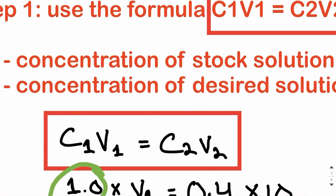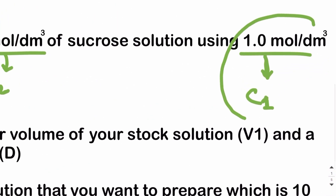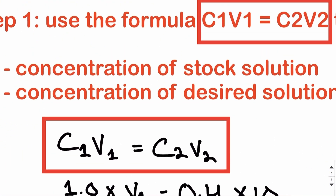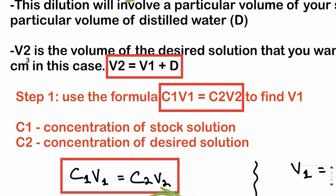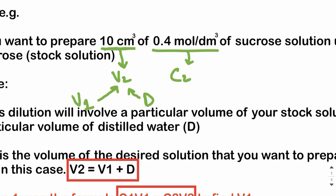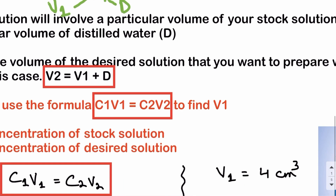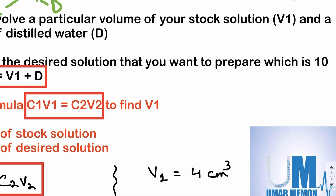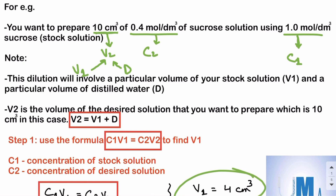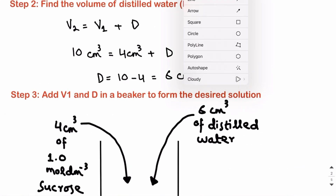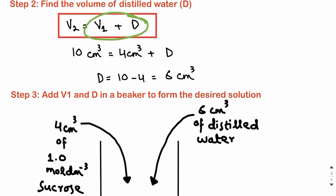C1 is 1.0 — the concentration of the stock solution. V1 is what we need to find — the volume of stock solution to use. C2 is 0.4, the concentration of the desired solution. V2 is 10 cm³, the volume of the desired solution. Solving gives V1 = (0.4 × 10) / 1.0 = 4 cm³. Then D = V2 − V1 = 10 − 4 = 6 cm³.